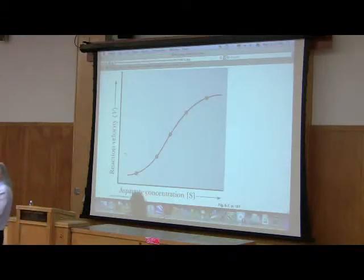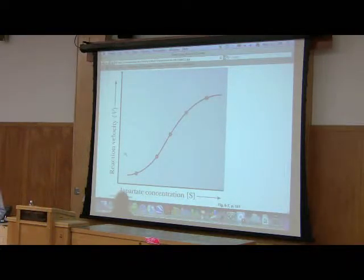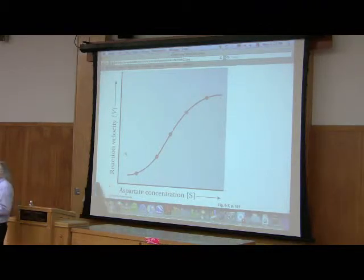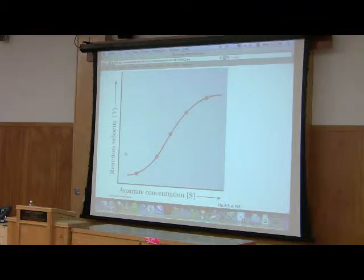ATCase is inhibited by feedback inhibition. So this keeps the cell from making too much CTP. Okay, we've got plenty of CTP. Go make some G, go make some A, et cetera. We've got all of these things. Does that make sense?